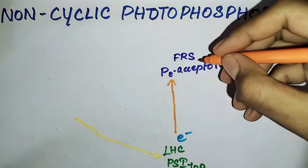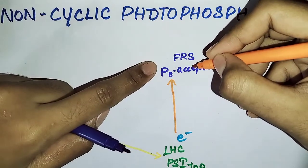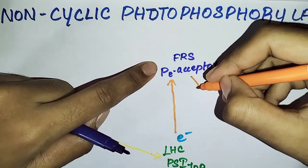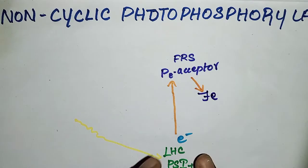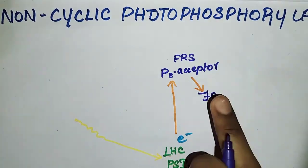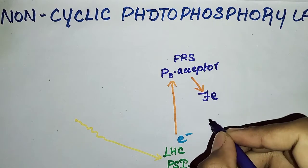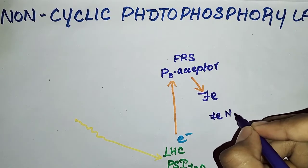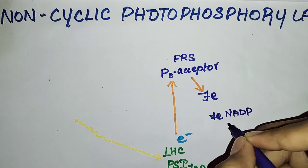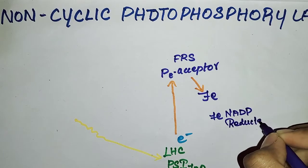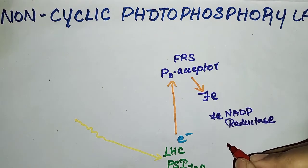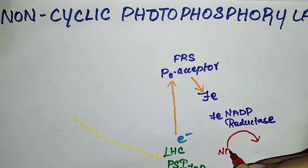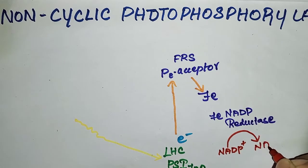Then this electron, when accepted in this primary electron acceptor, flows down to ferredoxin. When this electron reaches ferredoxin reducing substrate and comes to ferredoxin, and ferredoxin NADP reductase — then NADPH is formed. NADP+ forms NADPH + H+.